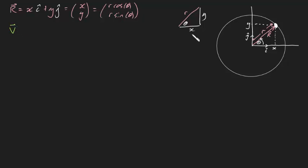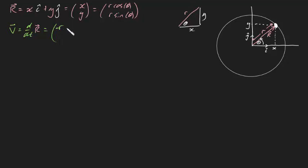We know that our velocity vector — the velocity vector of our particle — by definition is d/dt of R. This is just a matter of differentiating the expression above. Well, r is a constant, so that's easy. So that's going to be r times minus sine theta, and since this is theta not t, we need to account for it by multiplying by theta dot. Theta dot is dθ/dt — that's just the chain rule. And differentiating the bottom component gives r cosine theta times theta dot as well.